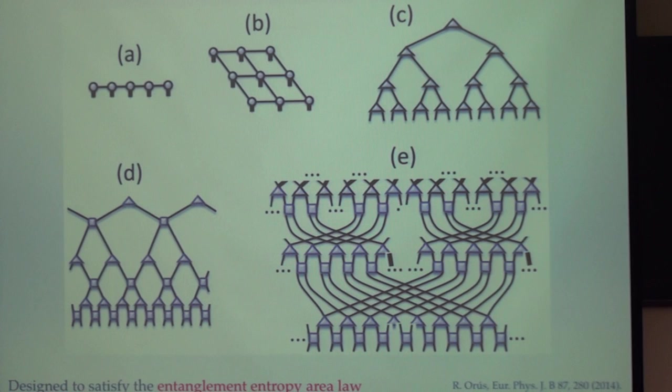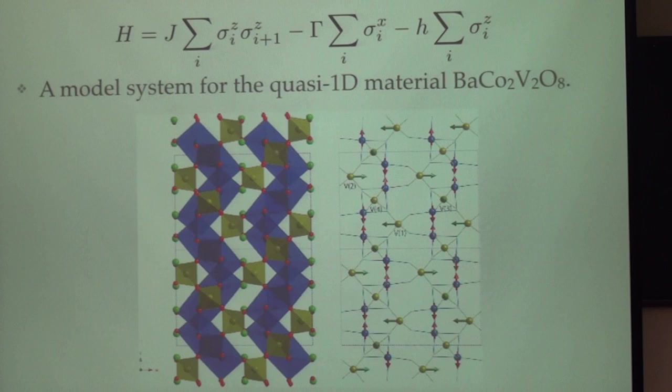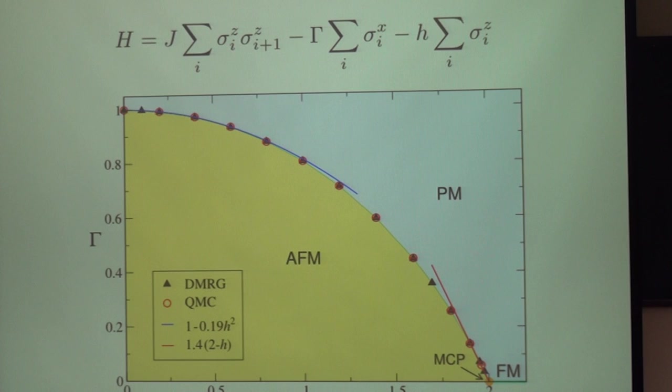They can be used to represent the quantum state and they are designed to satisfy the entanglement entropy area law. This is not the model, but what we want to study is this any ferromagnetic quantum Ising chain spin chain with the applied longitudinal field and transverse field. I look very hard, this might be a model system for this model.